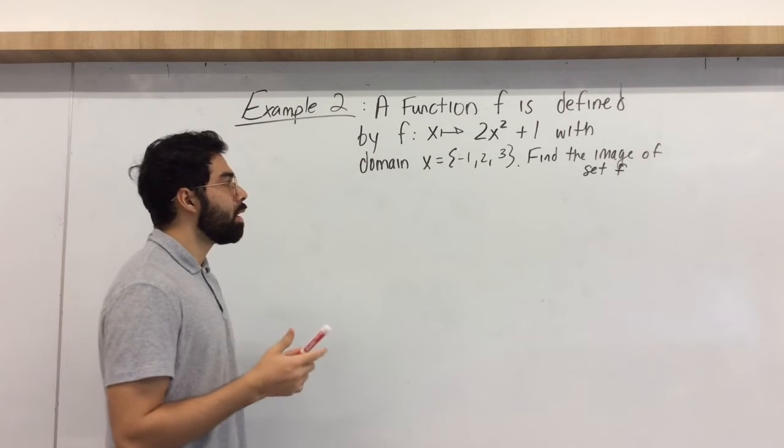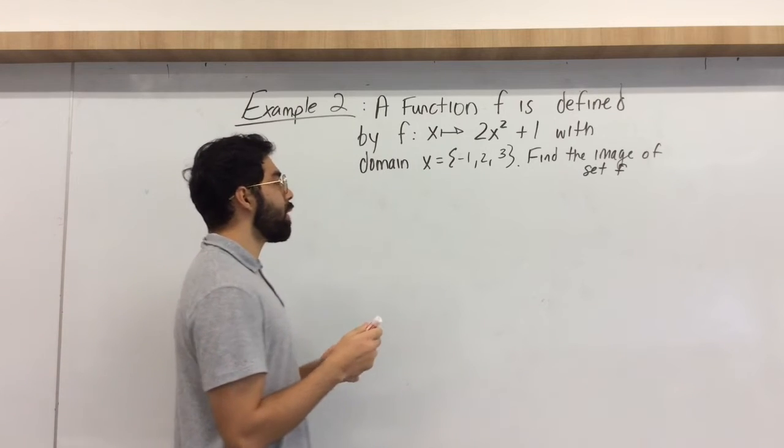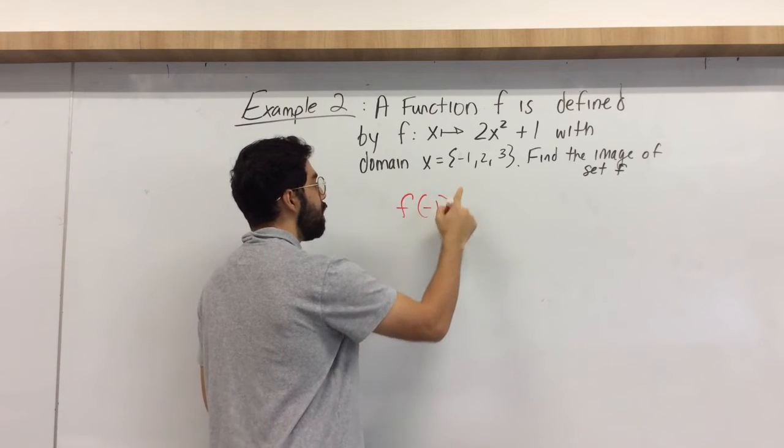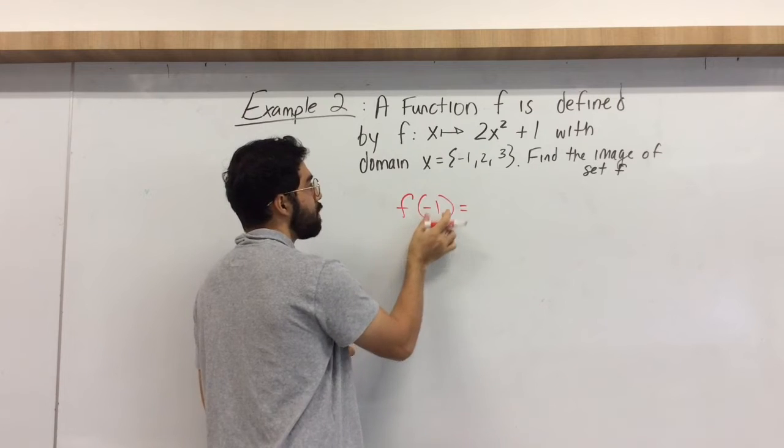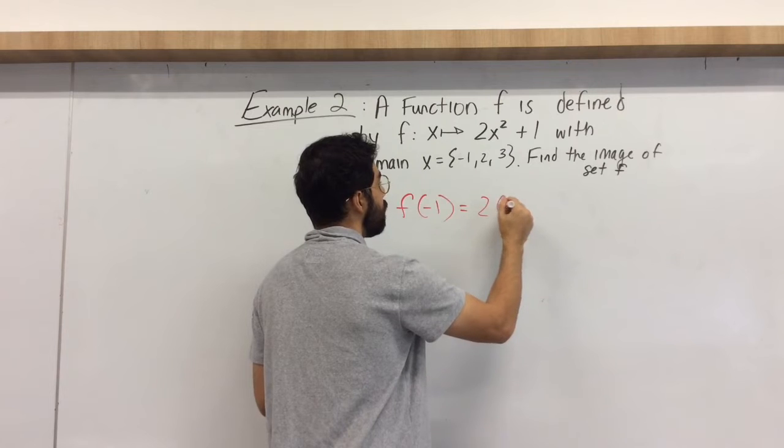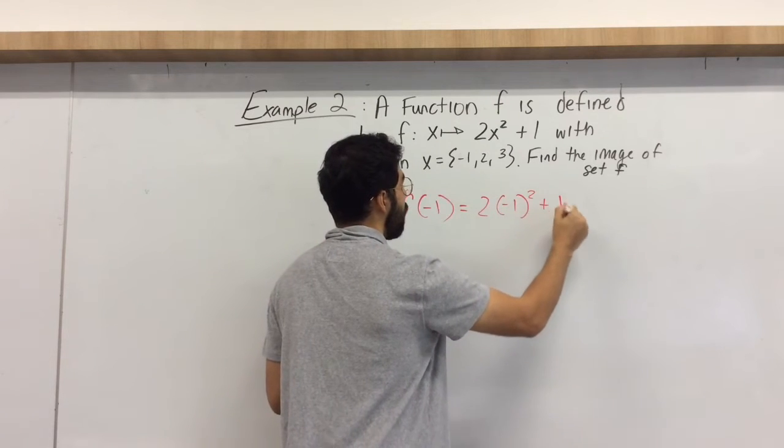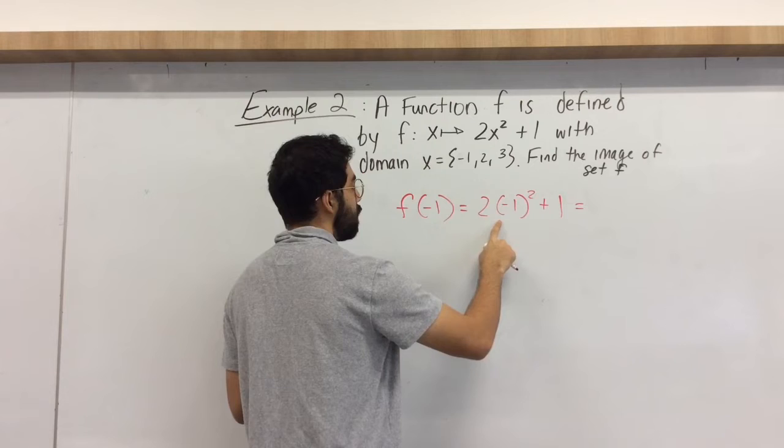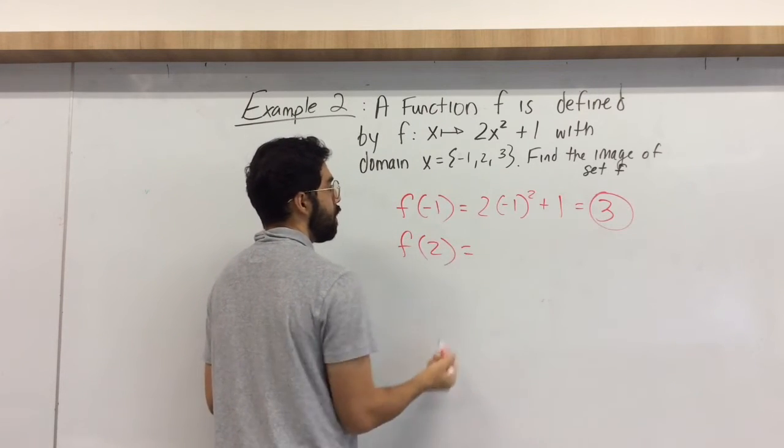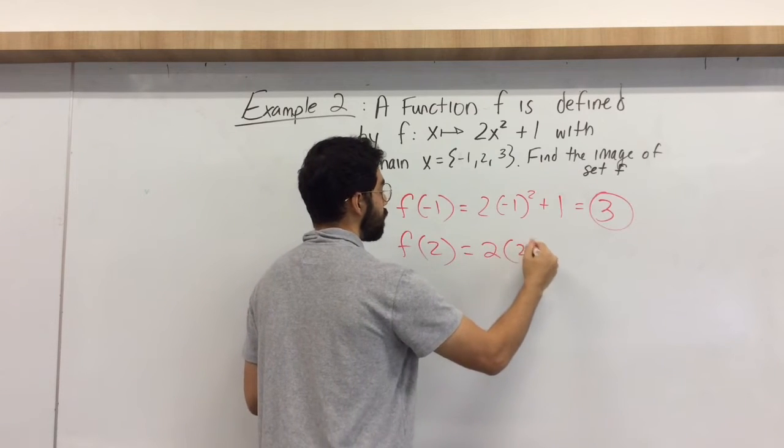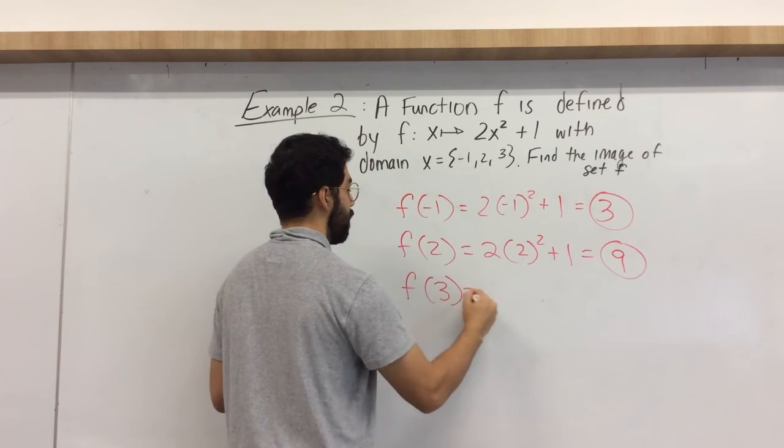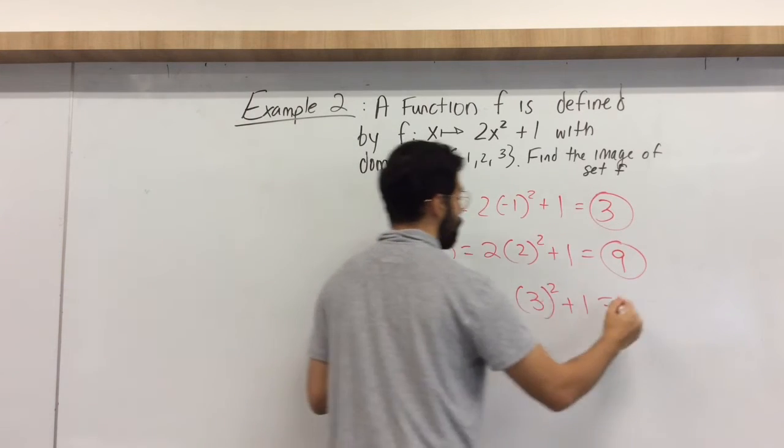So again, not too bad, we just have to get used to the vocabulary and the notation here. We're going to say f of negative 1, our input, we input this into 2x squared plus 1. So 2, negative 1 squared plus 1, we're going to end up getting 3. f of 2 is going to end up being 4, 4, and 8, we get 9. And f of 3 finally is 2, 3 squared plus 1, 9 became 11, and 19.